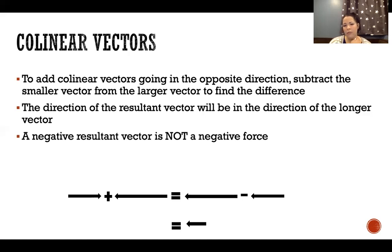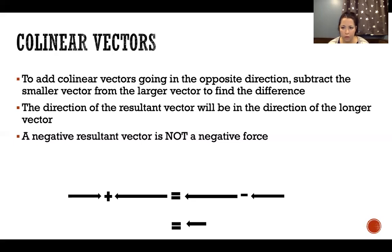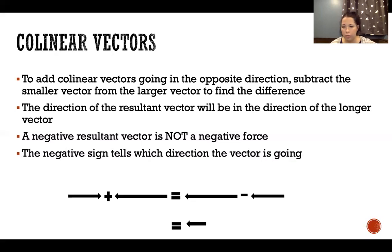A negative resultant vector is not a negative force. Anytime we come to the conclusion that we have a negative force, all that means is it's telling us the direction of that force. A force is a vector quantity — it has a magnitude and a specific direction. The negative or positive sign tells us which direction the vector is going, not that we have a subtractive force. It's the same force — it's just going this way or that way, negative or positive.